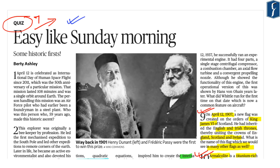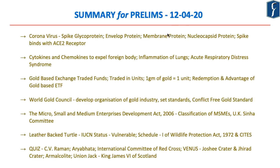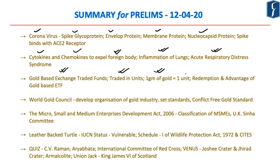This quiz highlights important aspects that can be asked by UPSC in the prelims examination. After today's discussion, your prelims summary includes: coronavirus and its four structural proteins — spike protein, envelope protein, membrane protein and nucleocapsid protein; the fact that spike protein binds with the ACE2 receptor of epithelial cells of the lower respiratory tract; cytokines and chemokines activated to expel foreign bodies; inflammation of lungs and Acute Respiratory Distress Syndrome due to coronavirus; and gold-based exchange traded funds traded in the stock market in units where 1 gram of gold equals 1 unit.